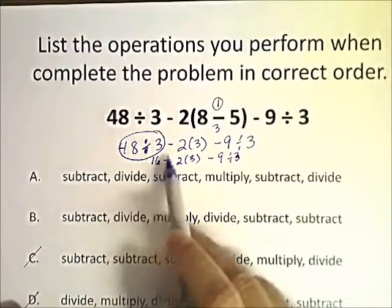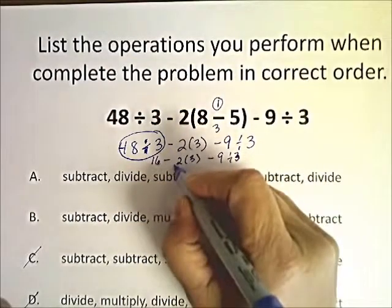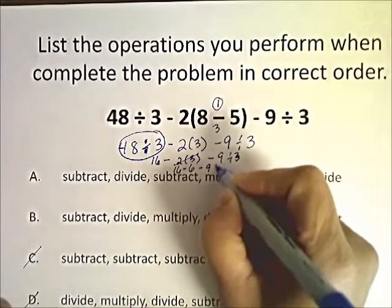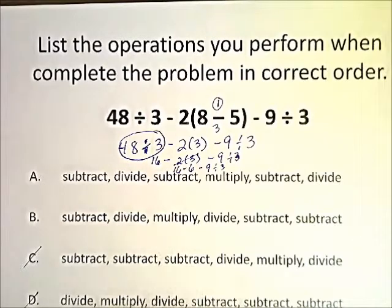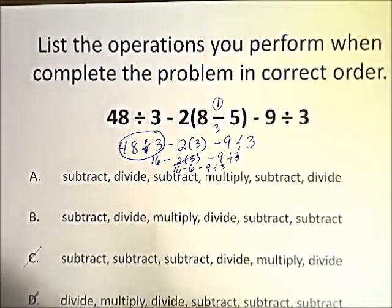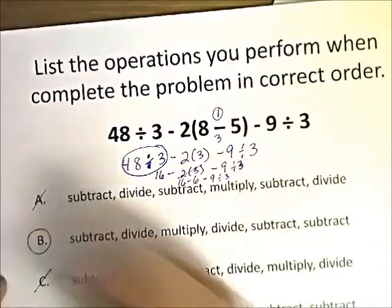So we see that our next step was division. So here we have divide and divide, and here we have subtract — so we know that C cannot be the correct answer. So we have 16 subtract 2 times 3 minus 9 divided by 3. Using our order of operations — parentheses, exponents, multiply, divide, add, subtract from left to right — we're going to do the 2 times 3, and 2 times 3 is 6. So we have 16 minus 6 minus 9 divided by 3. So in that case, we multiply next. We multiplied, so we're going to mark that one out. The correct answer has to be this one.